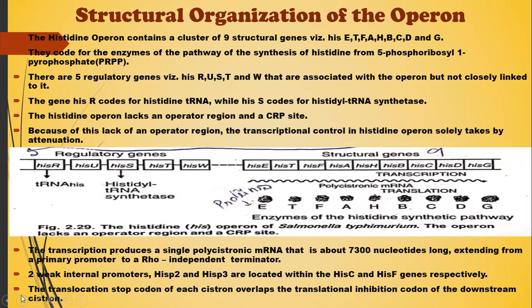The histidine operon lacks an operator region and a CRP site. Because of this lack of an operator region, transcriptional control in the histidine operon takes place solely by attenuation. Transcription produces a single polycistronic mRNA that is about 7,300 nucleotides long and extends from a primary promoter to a Rho-independent terminator.